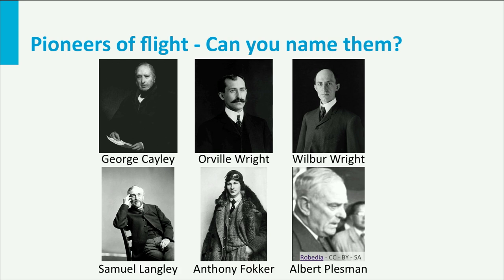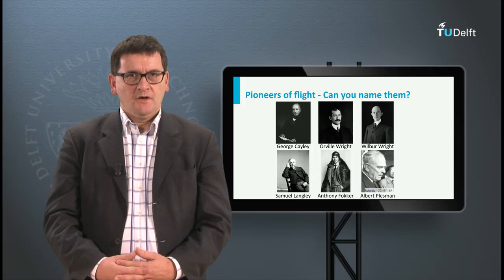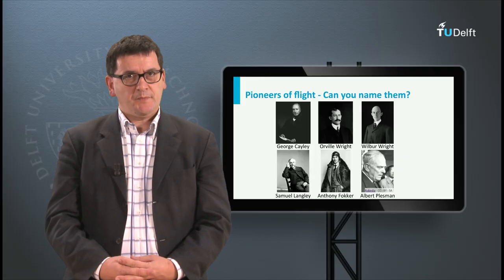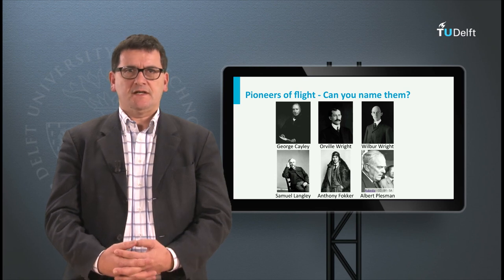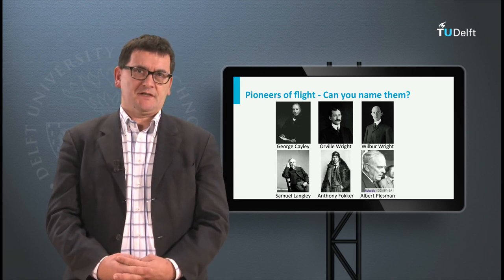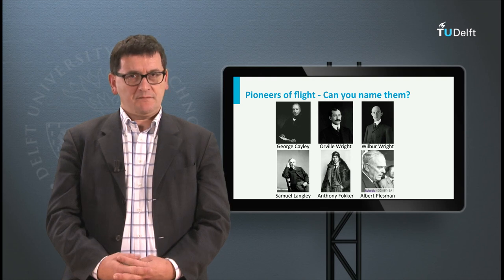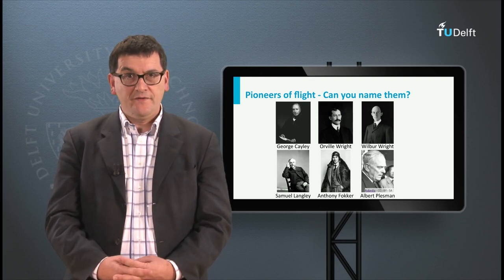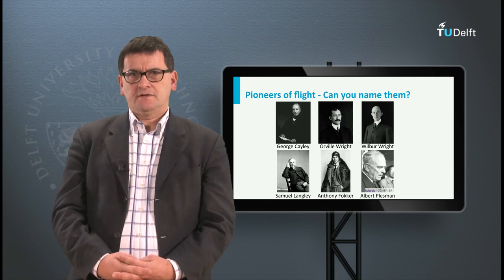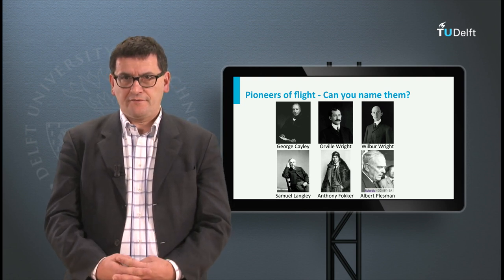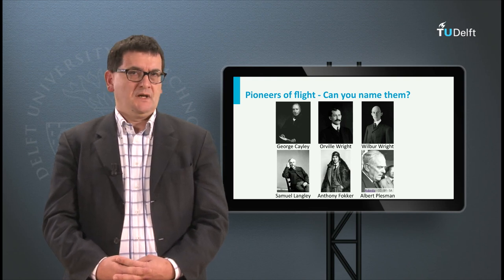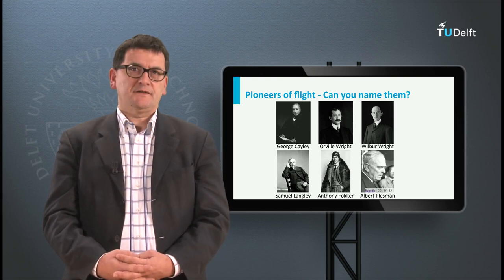These are the names of the six gentlemen. First, George Cayley — he was a 19th century English pioneer who indicated that the different functions of an aircraft, like lift and propulsion, should be separated. At that moment most pioneers thought of flapping wing vehicles. Next to him are the Wright brothers, famous for the first flight of a controllable, engine-powered aircraft. I will tell more about them later in this lecture.